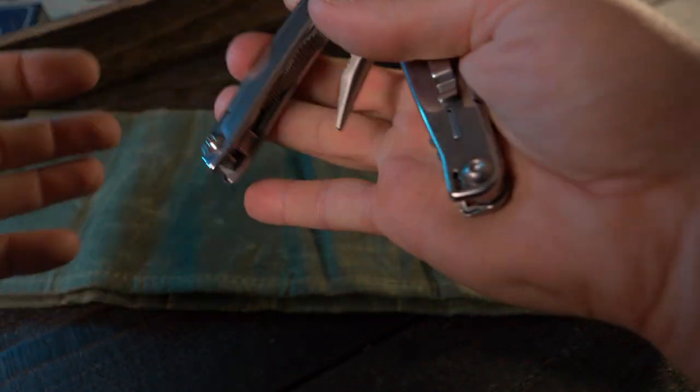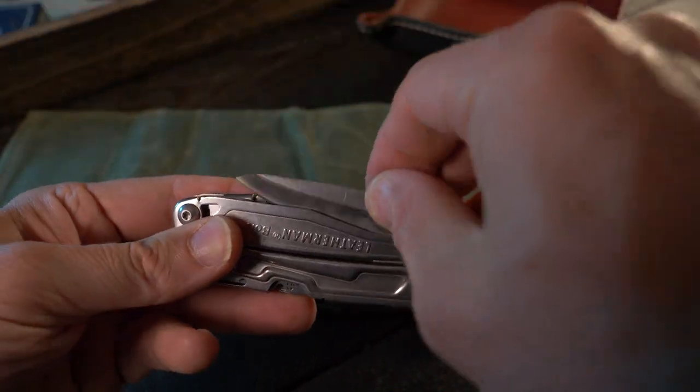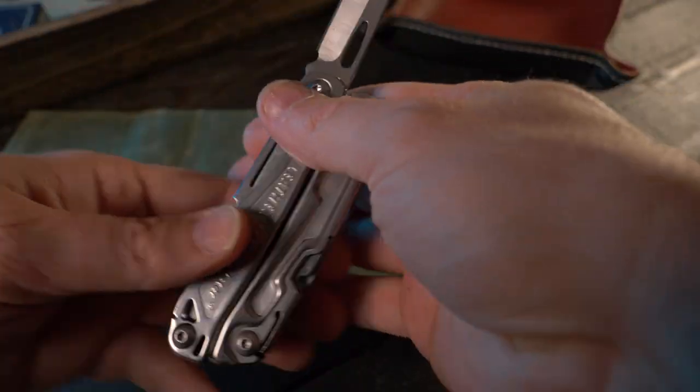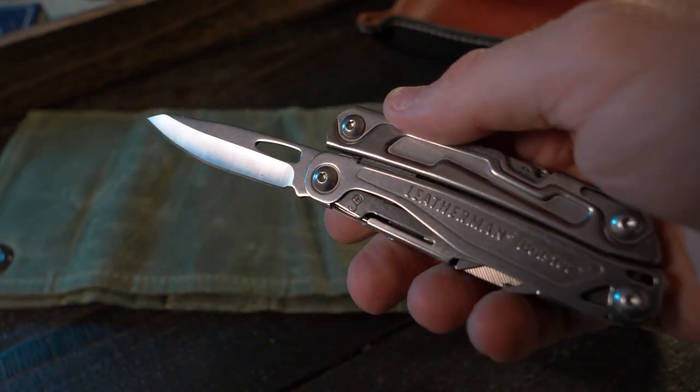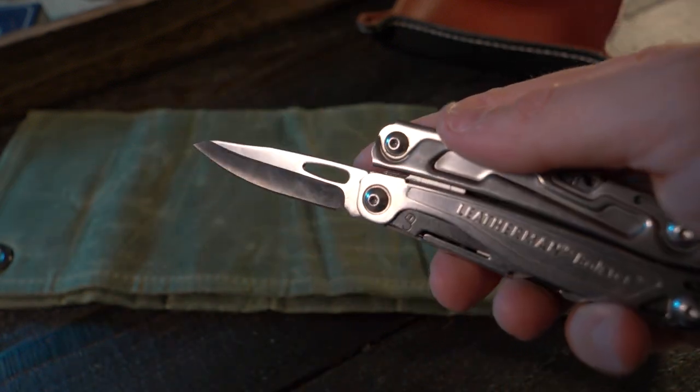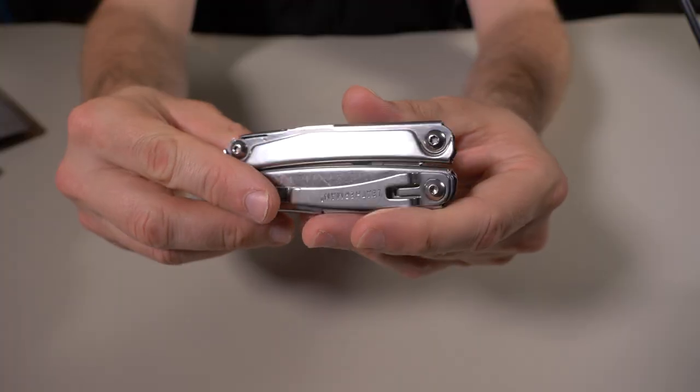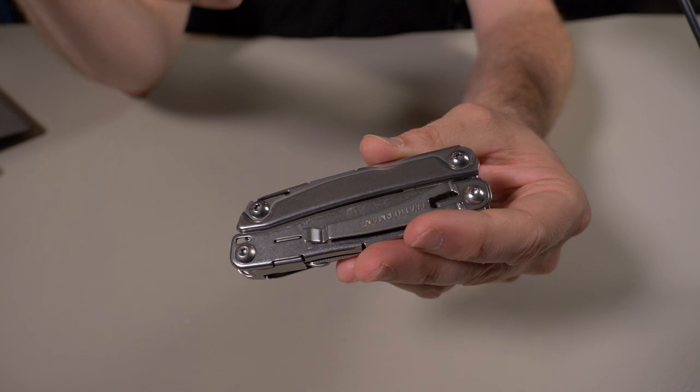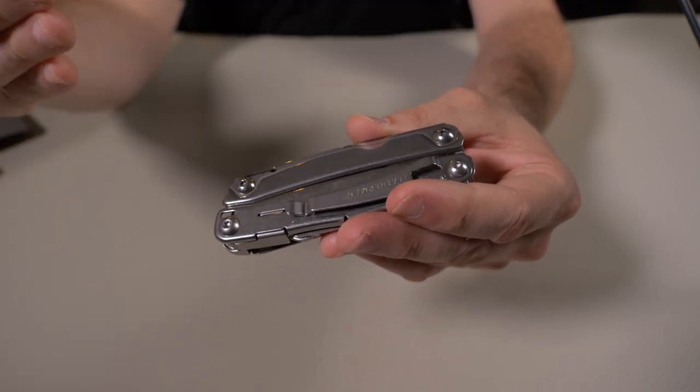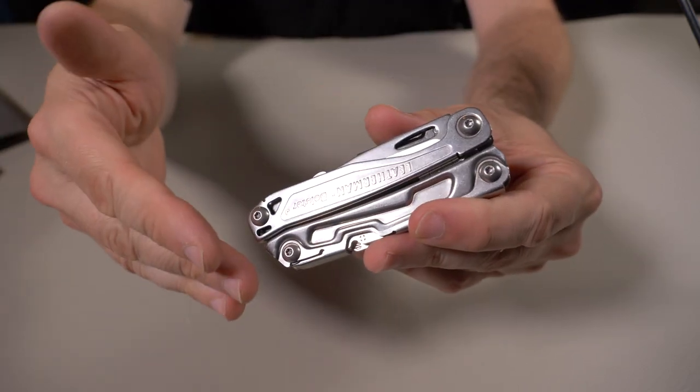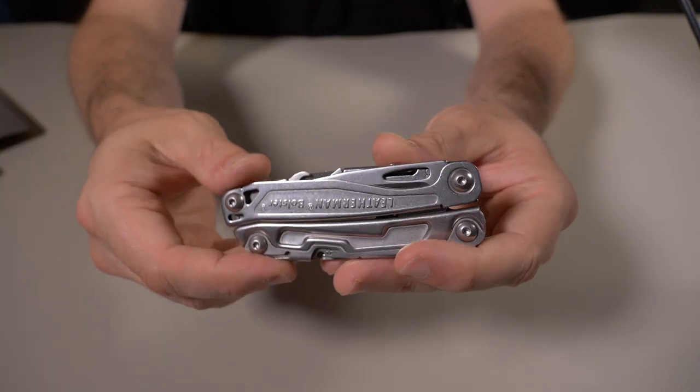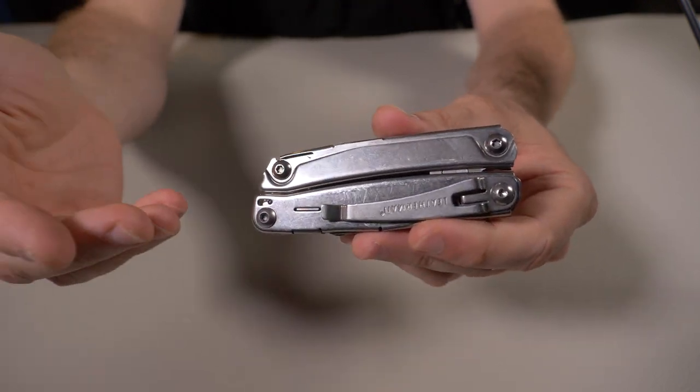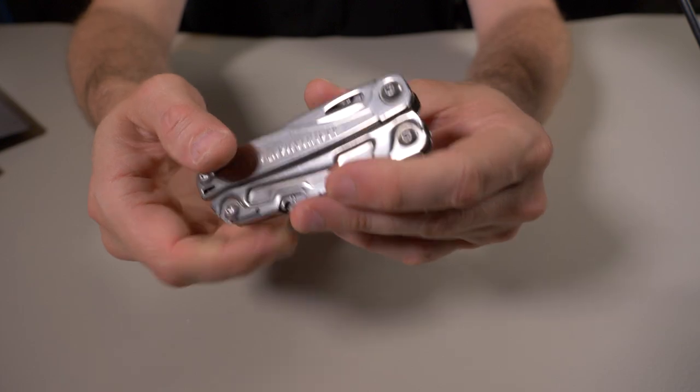The Leatherman Bolster: 13 tools, $59.95, weighs about 5.9 ounces. The Leatherman Sidekick has 14 tools, of course it's the saw, it's $69.95 so it's ten dollars more, and it weighs 7 ounces. So it weighs a little bit more. That's basically the only reason I can think to go with the Leatherman Bolster over the Sidekick is the weight difference. It weighs 1.1 ounces less than the Sidekick.